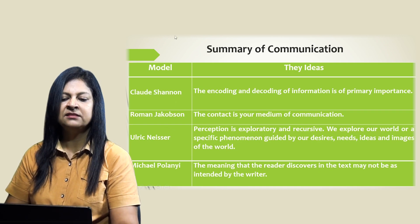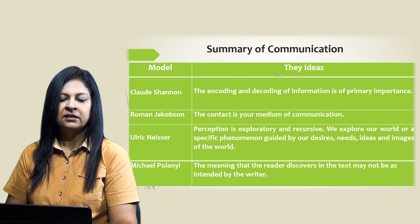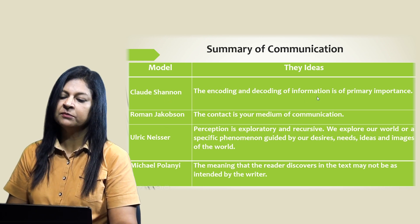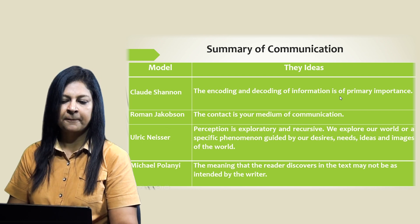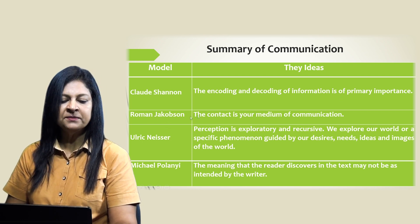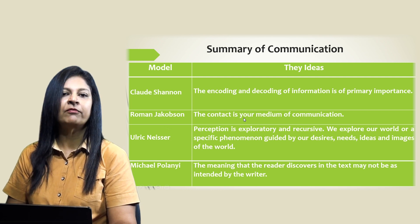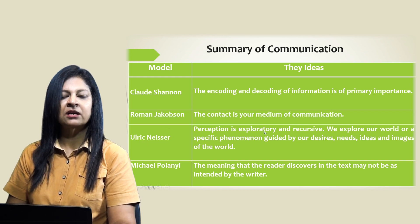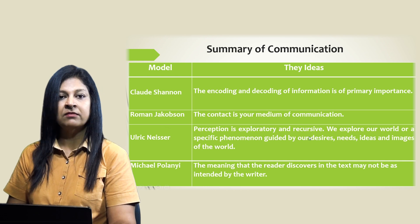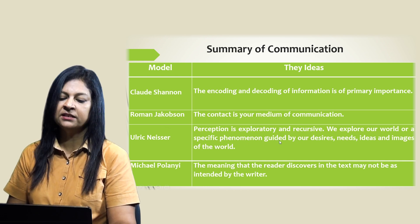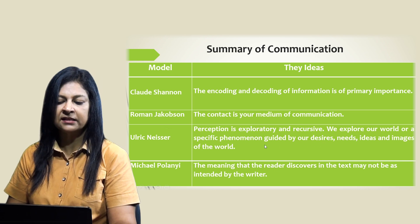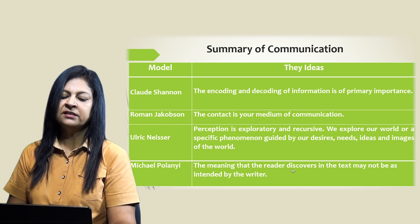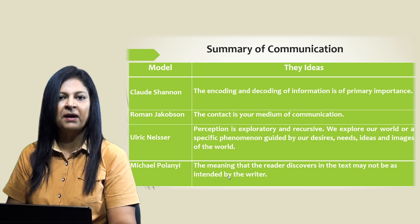Let's look at a summary of the communication models. The Channels Model: the encoding and decoding of information is of primary importance. In Roman Jakobson's model, the contact is your medium of communication. In Ulrich Neisser's model, perception is exploratory and recursive — we explore our world guided by our desires, needs, ideas, and images of the world. Finally, in Michael Polanyi's model, the meaning that the reader discovers in the text may not be as intended by the writer.